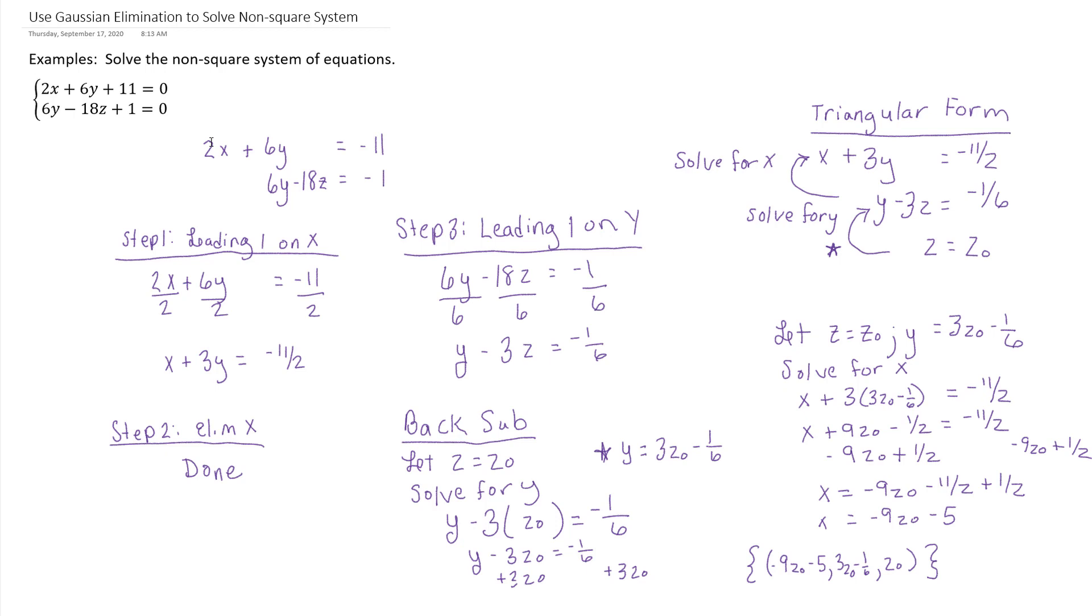You could use this as a check if you wanted. You don't have to do this. At this point you're done with the problem. But you could pick a value for z naught. If you pick the value 0, then everywhere there's a z naught plug in 0. So 3 times 0 minus 1 sixth would give you negative 1 sixth. And then plug in 0 for z naught in the x part. Negative 9 times 0 is 0 minus 5 is negative 5. So one of the infinitely many ordered triples is negative 5, negative 1 sixth, 0.